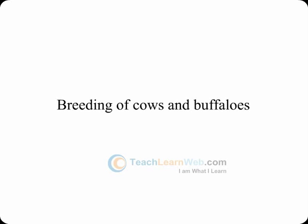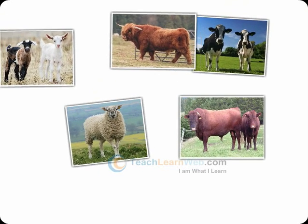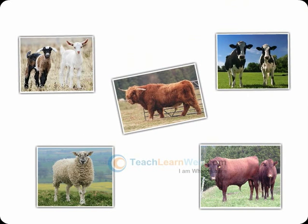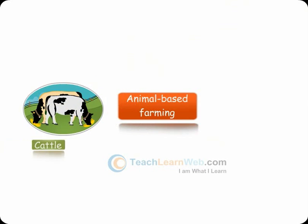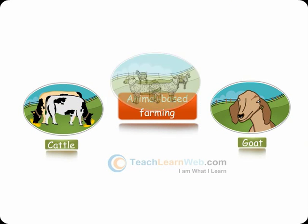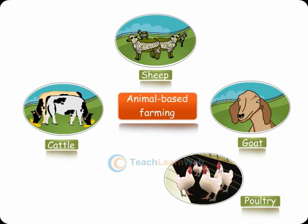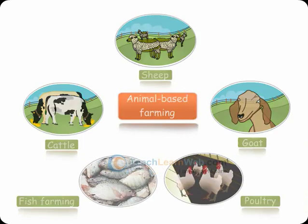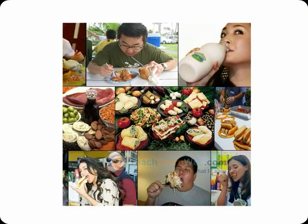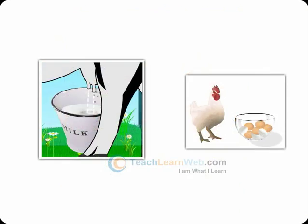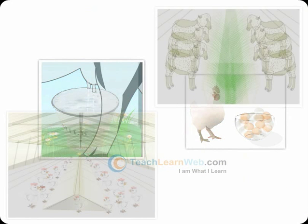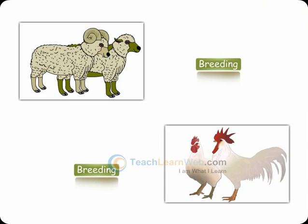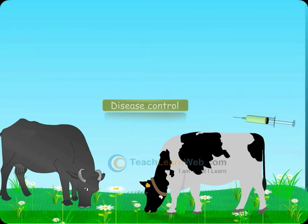Breeding of cows and buffalos is the scientific management of animal livestock. Animal-based farming includes cattle, goat, sheep, poultry, and fish farming. To meet the food demands of a growing population, animals should be improved in their production. It includes different aspects of feeding, breeding, and disease control.